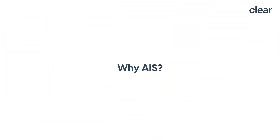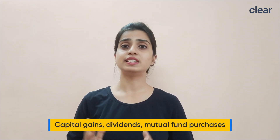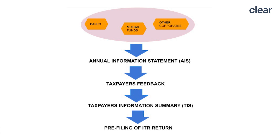In this video, let us learn everything you need to know about AIS and how to download it. Let us first understand why the Annual Information Statement was introduced by the government. Currently, Form 26AS displays details of TDS or TCS transactions, property purchases, and high-value investments carried out during the financial year. The Income Tax Department now also has access to details of capital gains, dividends, mutual fund purchases, etc. All such information is reported by banks and other corporates to the Income Tax Department as part of compliance, and the department has started sharing this information with taxpayers via the new Annual Information Statement.